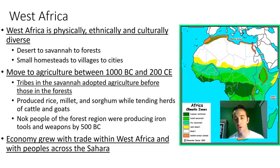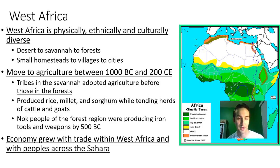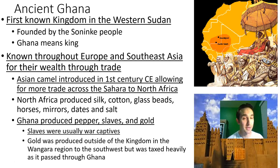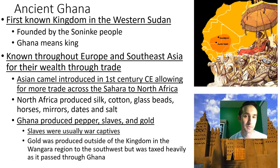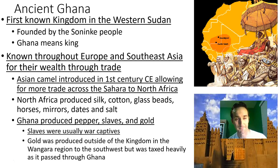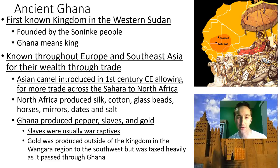The economy is going to grow with trade within West Africa, as they're trading different agricultural products and iron, but they also start to trade across the Sahara Desert. Ancient Ghana is the first known kingdom in the Western Sudan, that western region, founded by the Soninke people. Ghana literally translates to 'king,' and they became known throughout Europe and throughout the Middle East for their wealth through trade.